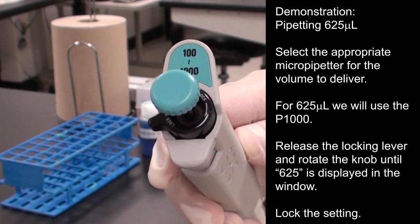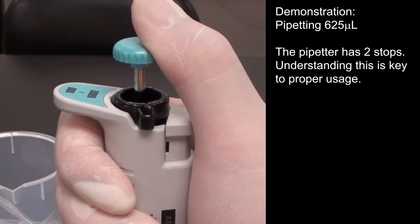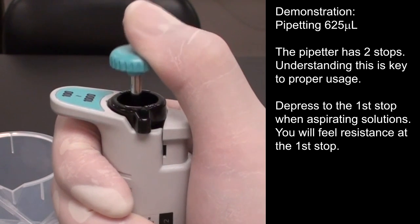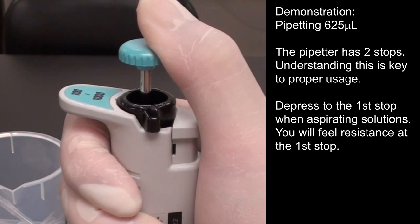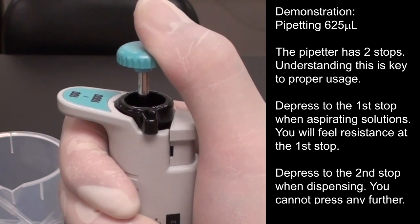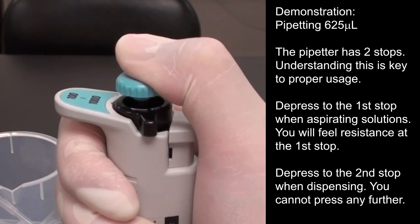The pipetter has two stops. Understanding this is key to proper usage. Depress to the first stop when aspirating solutions. You will feel resistance at the first stop. Depress to the second stop when dispensing. You will not be able to press any further.